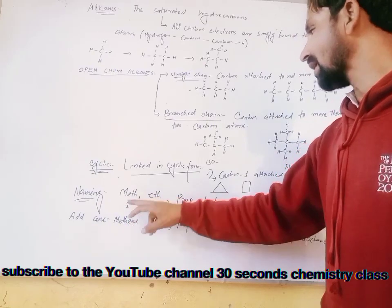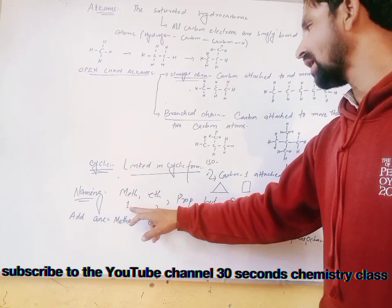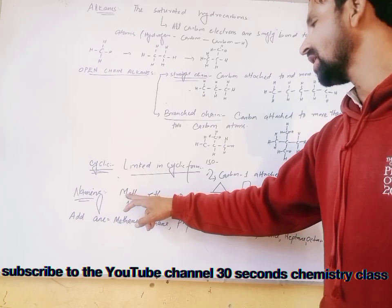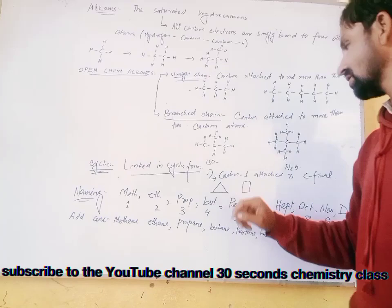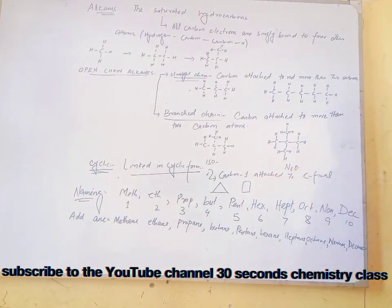Look, if a compound has one carbon, it will be named as meth. Two is eth, three is prop, four is but, pent, hex, and so on.